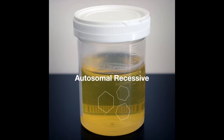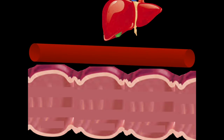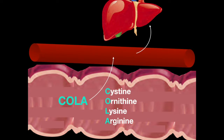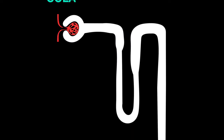It is caused by a hereditary autosomal recessive disorder that occurs in one in every 7,000 people, where the intestinal transport of COLA — cysteine, ornithine, lysine, and arginine — is defective. And more importantly, the renal proximal convoluted tubule cannot reabsorb the COLA either.